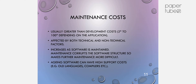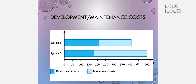Maintenance cost is usually greater than development cost. It is affected by both technical and non-technical factors and increases as software is maintained, because maintenance corrupts the software structure, making further maintenance more difficult. Aging software can have high support costs due to old languages, compilers, etc. The graph shows that maintenance cost is always higher than development cost.